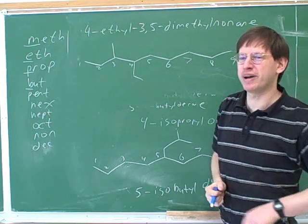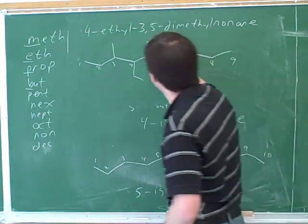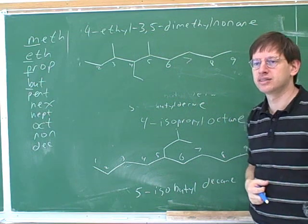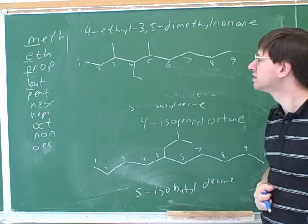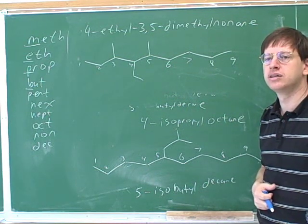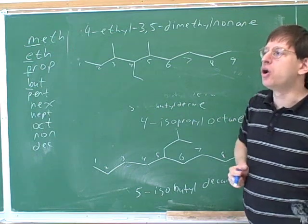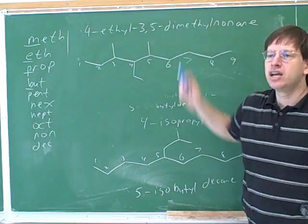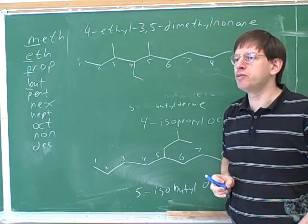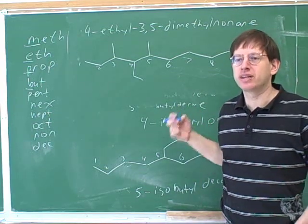You didn't sound too happy about that, but it's a methyl group, so it has only one carbon. What confused me was I assumed dimethyl would be like two on the five. Okay, so when we say 'di,' we mean that there are two methyl groups in the molecule. We don't mean that they're on the same carbon.